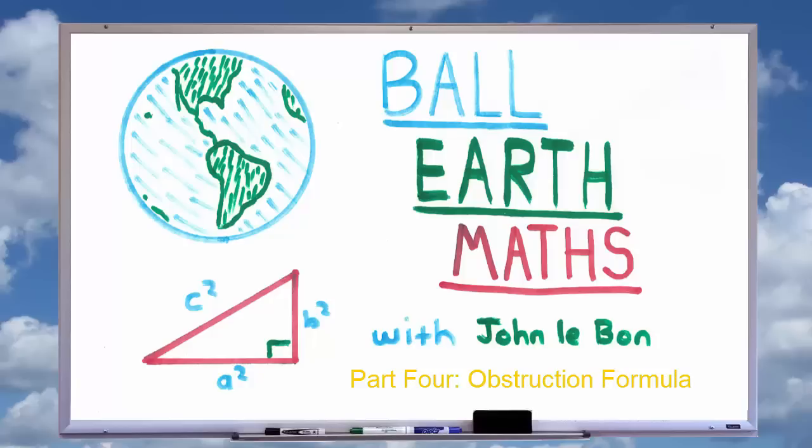These findings are useful for people studying the shape of the earth as it allows us to compare what we see across distances with what we ought to see if the earth is a giant ball with a radius of 3,959 miles as we are told by NASA.